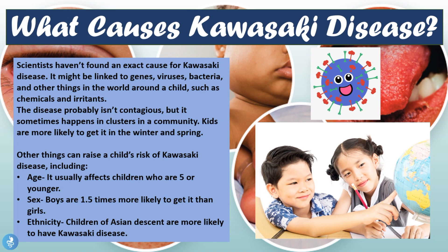A few things that can raise a child's risk of developing Kawasaki disease include age — it usually affects children who are five years or younger — sex, as boys are 1.5 times more likely to get it than girls, and ethnicity, as children of Asian descent tend to be more likely to develop Kawasaki disease.